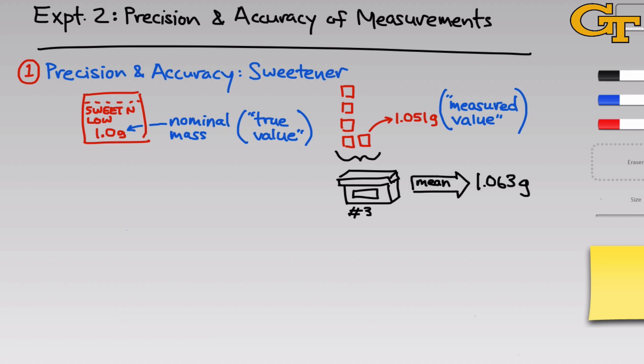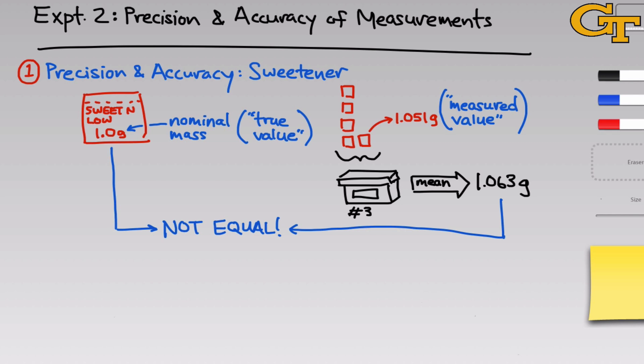If we do that for all five and get a mean, it might come out to something like 1.063 grams. The important thing to note is that the 1.063 gram mean and the 1.0 gram nominal mass are not equal. In scientific terms, the true value and the measured value are not equal. This is an indication of inaccuracy — the measurement is inaccurate because it's not exactly equal to the true value.